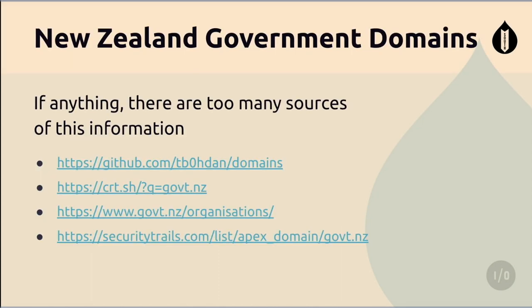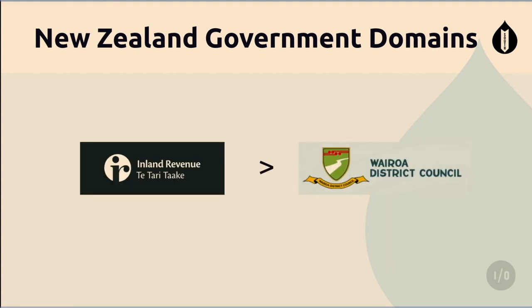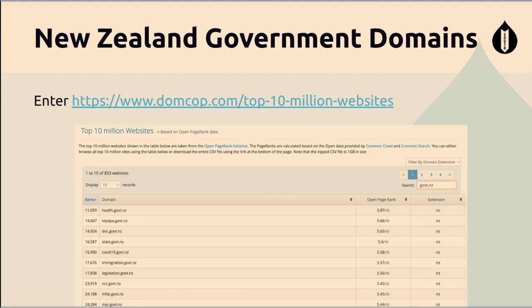The next question is: how do I get a list of all the New Zealand government sites? Just like in Australia, there are too many sources. There's gov.nz/organizations if you want an A to Z list, and you can do some snooping on transparency logs and certificate trails as well. But the main problem is there's no ranking or importance associated with those. For example, Inland Revenue versus a small local council — one of those sites is going to be a lot more important to New Zealand.